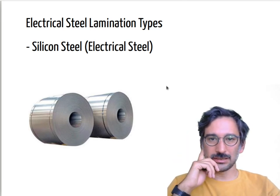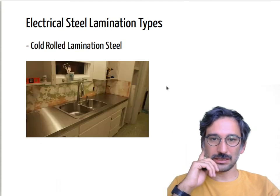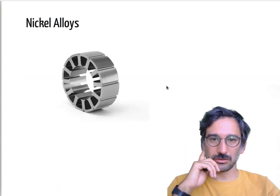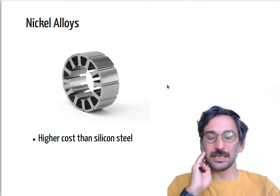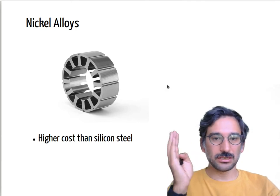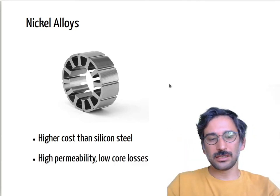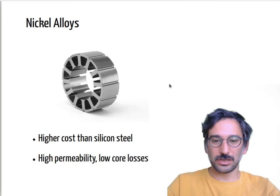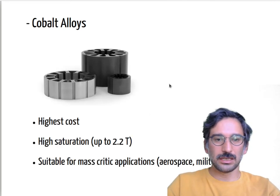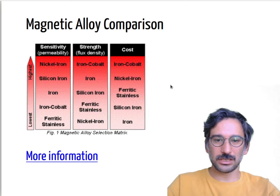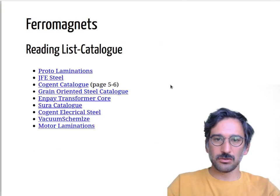The most common electrical steel types include silicon steel, cobalt steel, and nickel alloys. Cobalt alloys are mainly for electrical machine applications and usually have high saturation points.